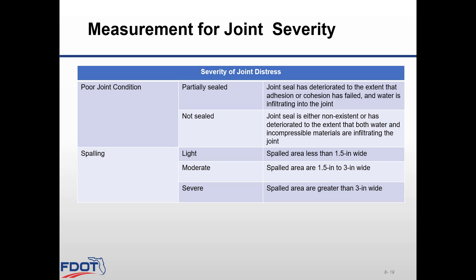This table summarizes the severity of joint distress. The severity for poor joint condition is measured as partially sealed or not sealed. Partially sealed is a joint seal that has deteriorated to the extent that adhesion or cohesion has failed and water is infiltrating the joint. Not sealed means the joint seal is either non-existent or has deteriorated so that both water and compressible material are infiltrating the joint. The severity of spalling is measured as light, moderate, or severe: light is a spalled area less than 1.5 inches wide; moderate is 1.5 to 3 inches wide; severe is any spalled area greater than 3 inches wide.